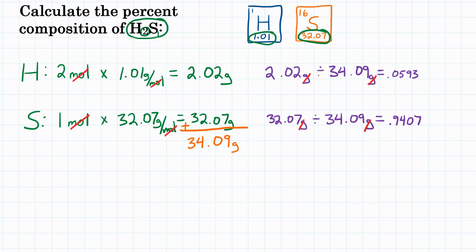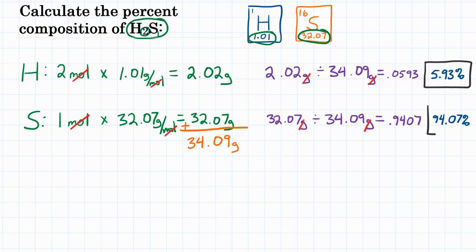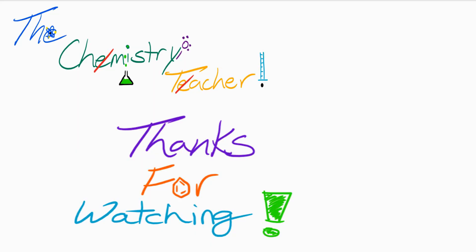And lastly, we have decimals, so let's turn those into actual percentages. For hydrogen, multiply by 100 and we get 5.93%. And for sulfur, multiply 0.9407 by 100 and we get 94.07%. So, final answer. Thank you so much for watching.